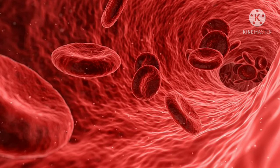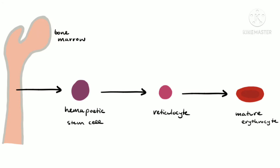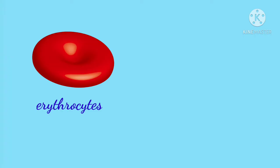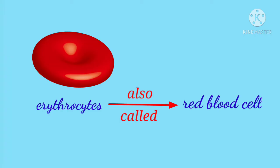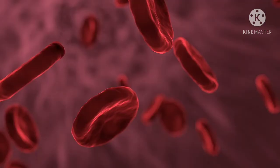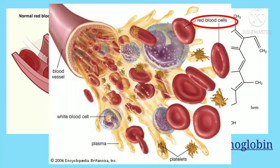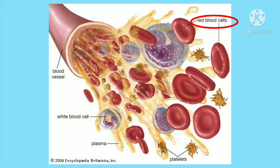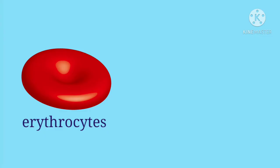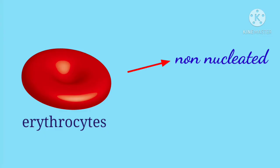Erythrocyte is a type of blood cell that is made in bone marrow. Erythrocyte is also called as red blood cell. Red color of the erythrocytes is due to the presence of coloring pigment called hemoglobin. RBCs are larger in number compared to the other two blood cells, i.e. white blood cells and platelets. Erythrocytes in mammals are non-nucleated and non-motile cells.